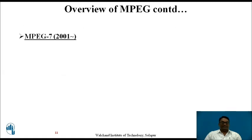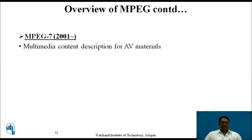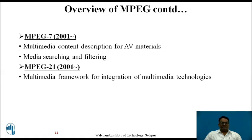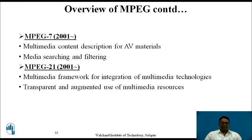MPEG 7 was developed in 2001 and included multimedia content description for audio and video materials, as well as media searching and filtering. MPEG 21 was also developed in 2001, with a work of multimedia framework for integration of multimedia technologies, transparent and augmented use of multimedia resources, and it generally deals with artificial intelligence as well.